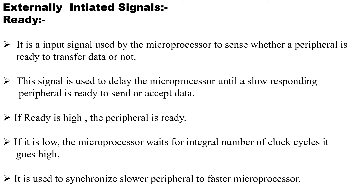Peripherals are very slow and the microprocessor speed is very fast. The microprocessor has to depend on the peripherals for transferring data, but since the speed of the peripheral is slow, if the microprocessor reduces its speed it will affect its efficiency. That is why we introduced the READY signal. So when the peripherals are slowly transferring data, in the meanwhile the processor will perform some other task. When the peripherals are ready for data transfer, they will make the READY pin high. If the READY pin is low, the microprocessor waits for an integral number of clock cycles until it goes high. This signal is used to synchronize the faster processor and the slower peripherals.